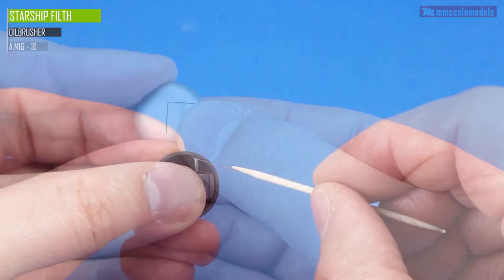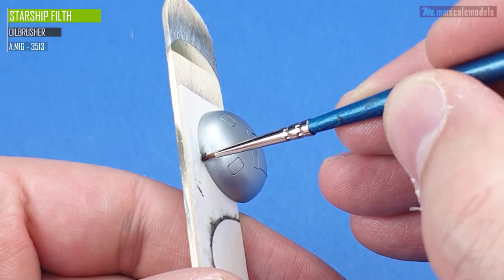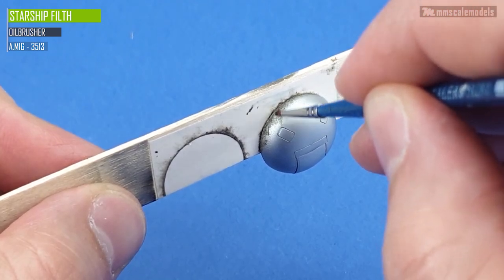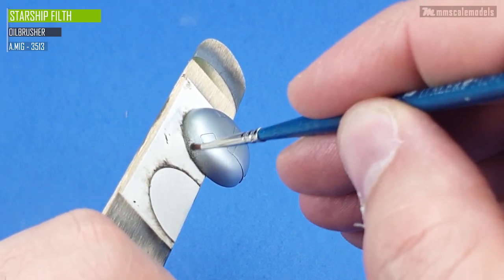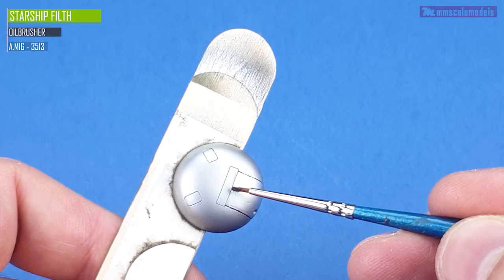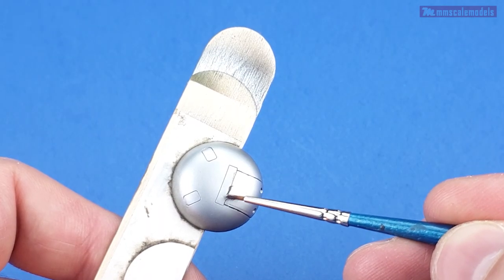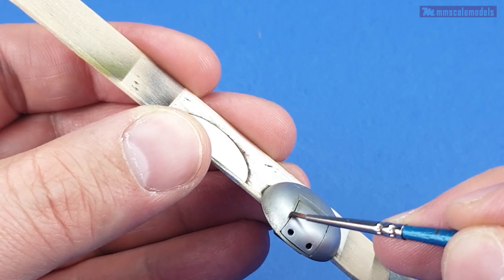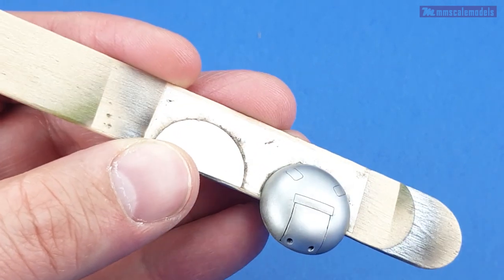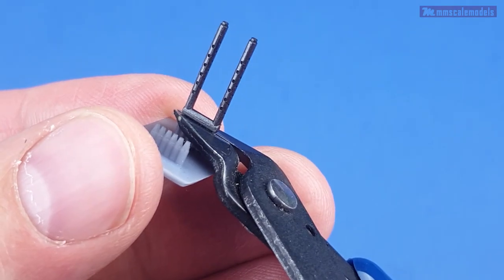After gluing the gun mount inside the turret fairing I applied Starship Filth oil paint on the lower edge of the fairing and blended it so that the intensity of the color reduces the higher on the turret we go. The same oil paint I used to add some grime on the gaps around the gun mounts. To be fair I did not expect to be able to create a perfect fit part but there you go.